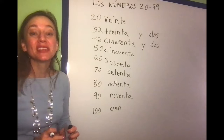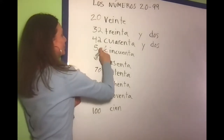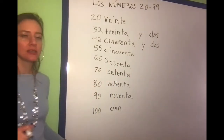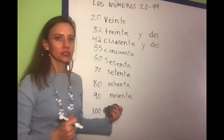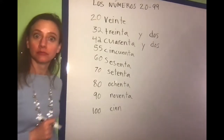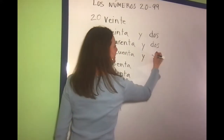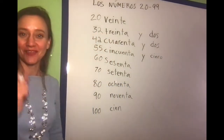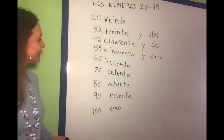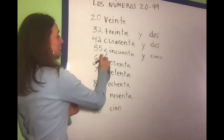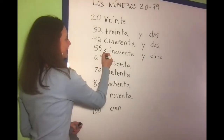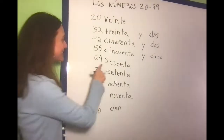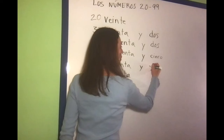What if I want to say 55? I know that cincuenta means 50. How do I say five in Spanish? Uno, dos, tres, cuatro, cinco. Cincuenta y cinco. Are you figuring out the pattern? What if I wanted to say 64? Could you figure it out? Sesenta y cuatro.